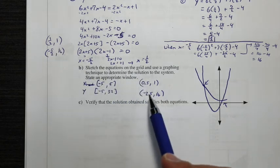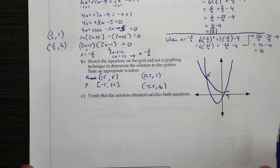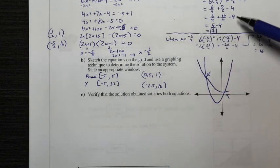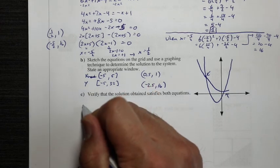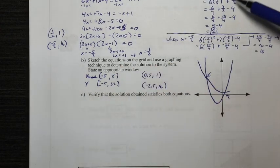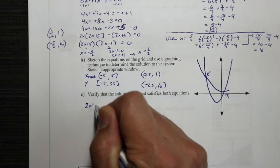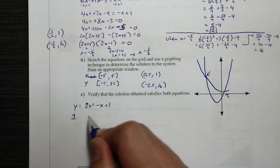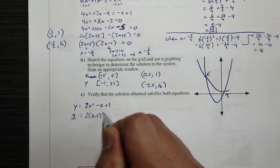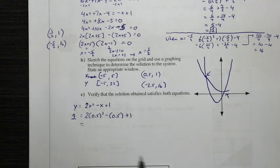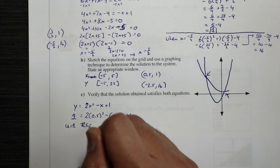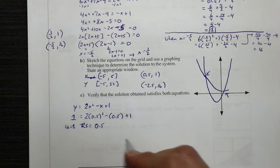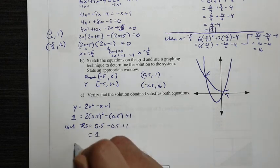Now we'll verify that our solutions satisfy both equations. We already used equation 1 to find the y values, so let's verify using equation 2: y equals 2x squared minus x plus 1. For the first solution, when y equals 1: the right side gives 2 times (0.5) squared minus 0.5 plus 1. That's 2 times 0.25, which is 0.5, minus 0.5 plus 1, equaling 1. The left side equals the right side — verified.